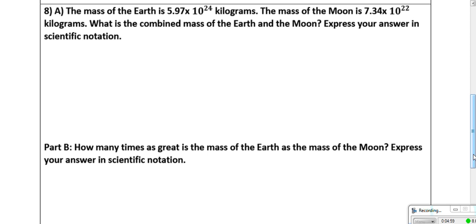Number 8 is a two-part question. It says the mass of the Earth is 5.97 times 10 to the 24th kilograms. The mass of the moon is 7.34 times 10 to the 22nd kilograms. What is the combined mass of the Earth and moon? You have to combine this and this, so it's obvious what you have to do.